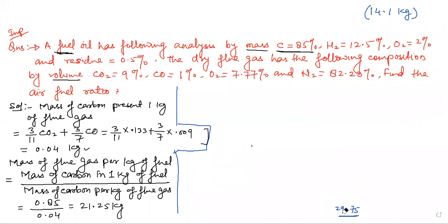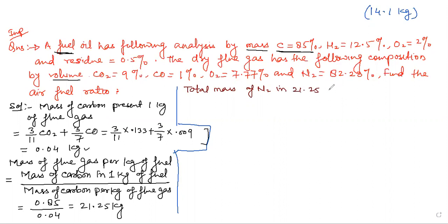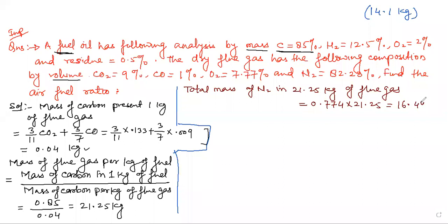Now we will find the total mass of N2. We solve: 0.774 (mass fraction of N2) × 21.25 kg of flue gas = 16.4447 kg total mass of N2 per kg of fuel.